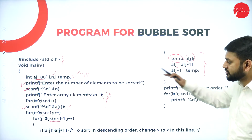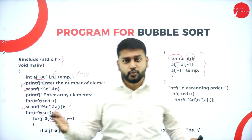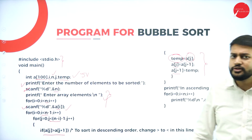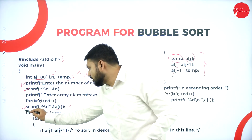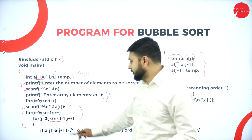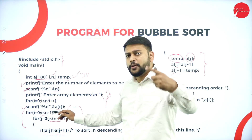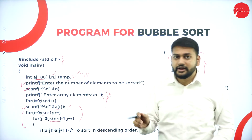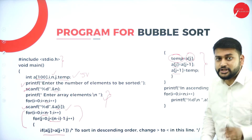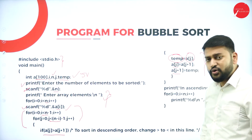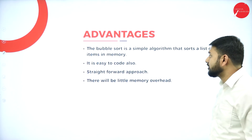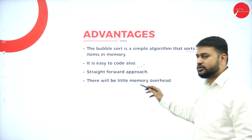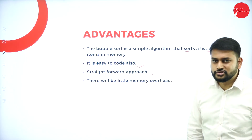After the nested loops complete the sorting, I print all elements in the sorted array. The two for loops are very important: the outer loop runs n minus 1 times, and the nested loop runs n minus i minus 1 times. Advantages of bubble sort: it is a simple algorithm, easy to code with a straightforward approach, and has little memory overhead.